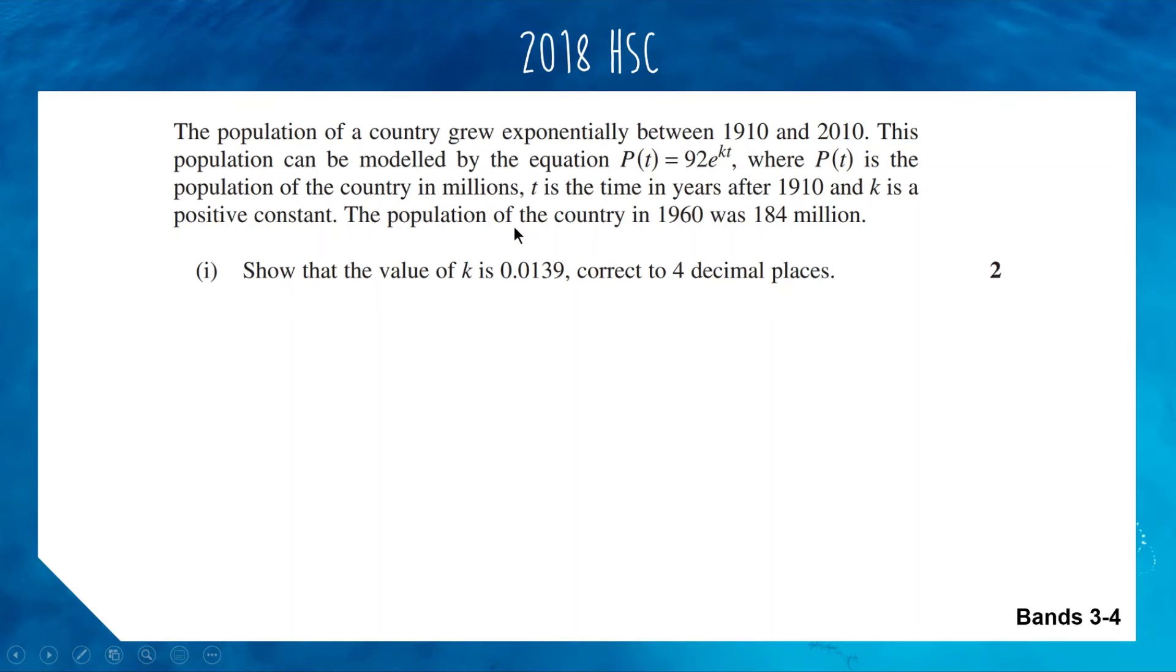We're going to show that k is 0.0139. This means there should be information we can substitute into our equation that we could solve for k and get this value. The information given is that the population in 1960, so when t equals 50, the population in millions should be 184. You've got to read the question carefully and figure out that when t equals 50, so 50 years after 1910, P is 184.